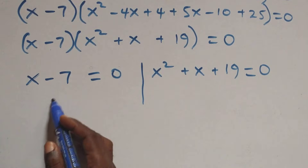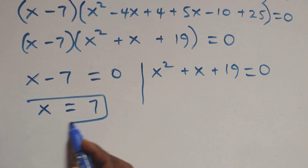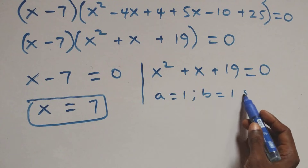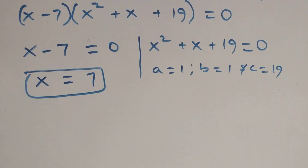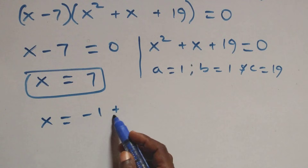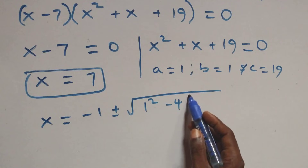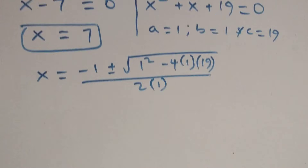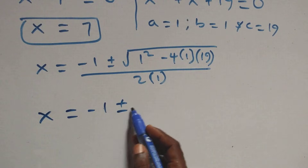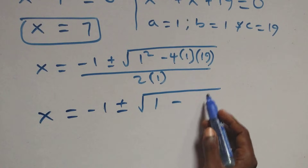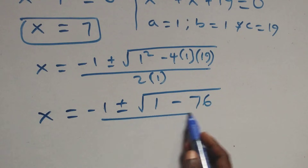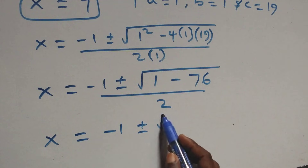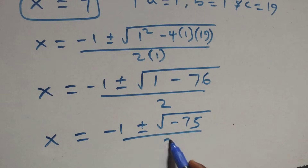From the first sub-case, x equals 7, which is a real solution. For the quadratic x squared plus x plus 19 equals zero, we have a equals 1, b equals 1, and c equals 19. Applying the quadratic formula: x equals minus 1 plus or minus square root of 1 squared minus 4 times 1 times 19 over 2 times 1. This gives x equals minus 1 plus or minus square root of 1 minus 76, which is minus 75, over 2.